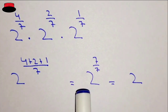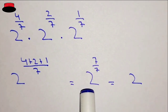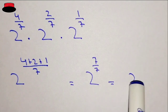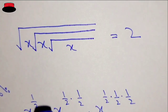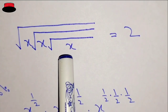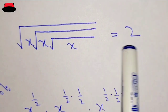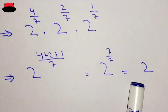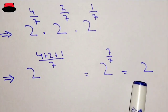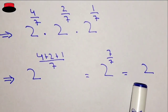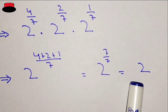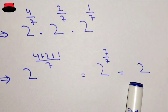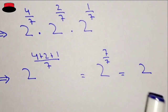We have 2 power seven over seven, because four plus two plus one is seven. So that is 2 power one, which equals 2. In the question we know this is also equal to 2, so the answer is 2 — therefore it is proved. I hope you understand, thank you for watching.